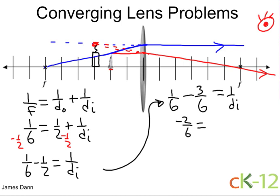Negative 1 third equals 1 over the image distance. And therefore, the image distance is simply negative 3.